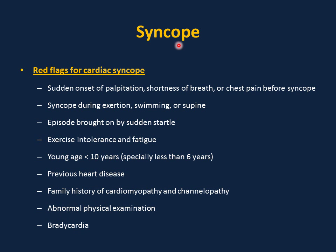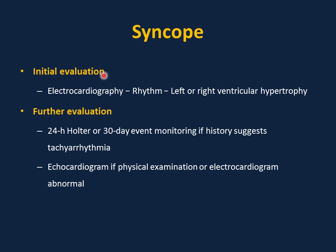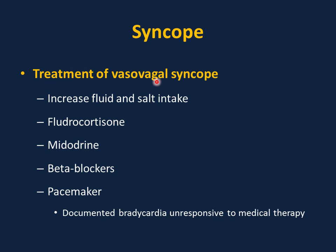Additional red flags include abnormal physical examination and bradycardia — normally you expect tachycardia in syncope, not bradycardia. Initial evaluation for suspected cardiac syncope: electrocardiography to check rhythm, arrhythmias, long QT, and left or right ventricular hypertrophy. Further evaluation: 24-hour Holter monitor or 30-day event monitoring if tachyarrhythmia is suspected, and echocardiogram if physical examination or ECG suggest structural abnormality. Treatment of vasovagal syncope: increase fluid and salt intake. For recurrent cases: fludrocortisone, midodrine, beta blockers, or pacemaker for documented bradycardia unresponsive to medical therapy.